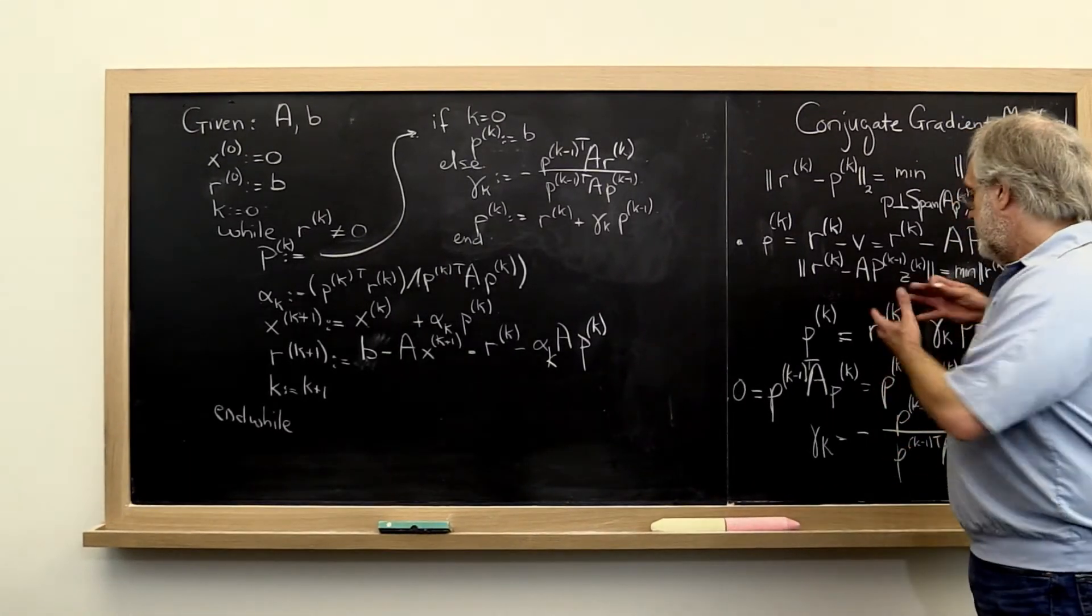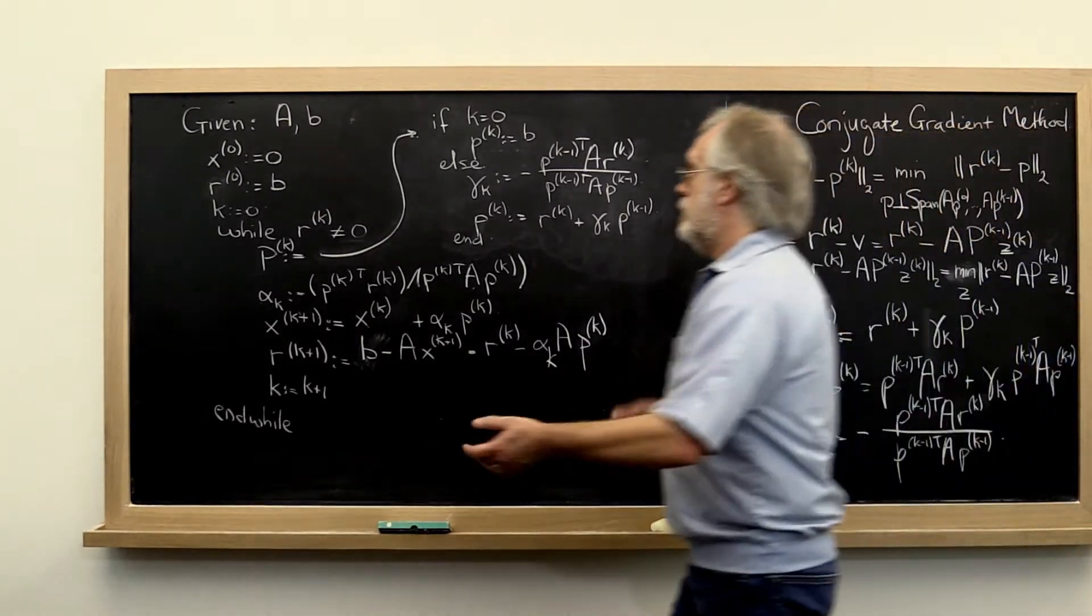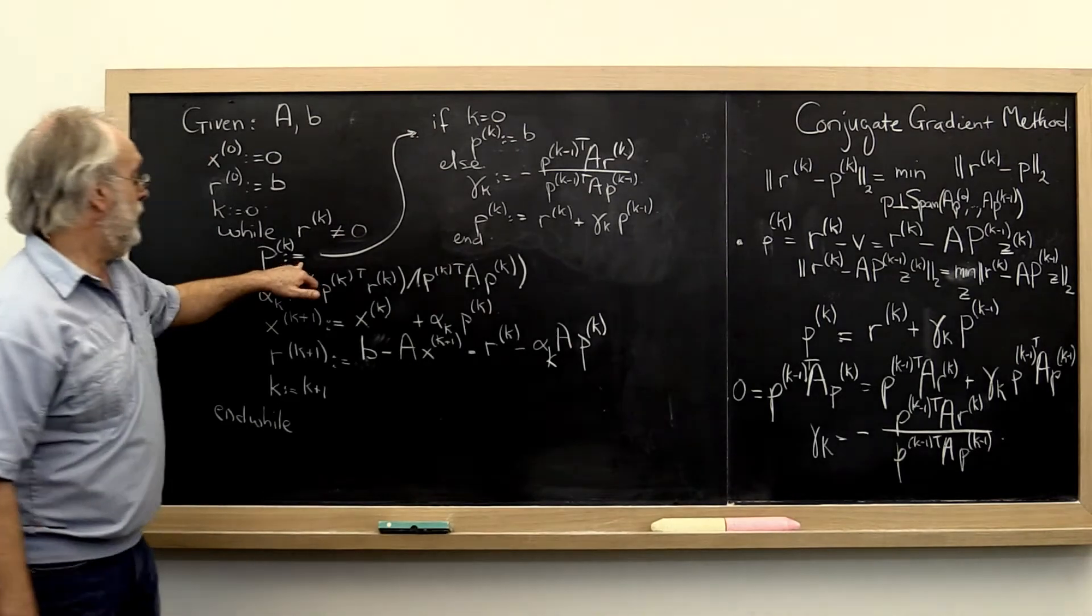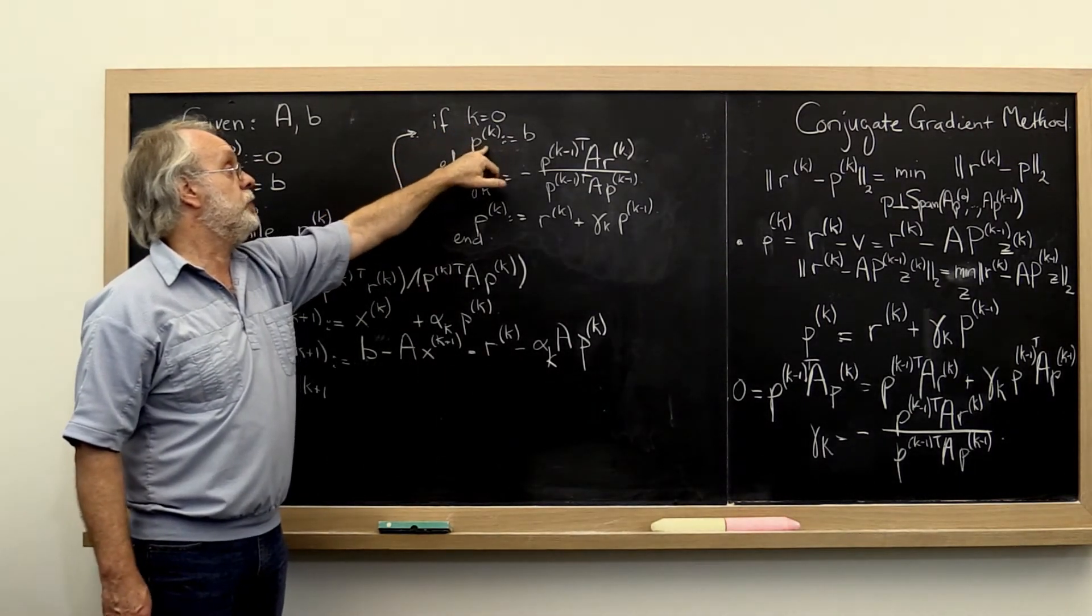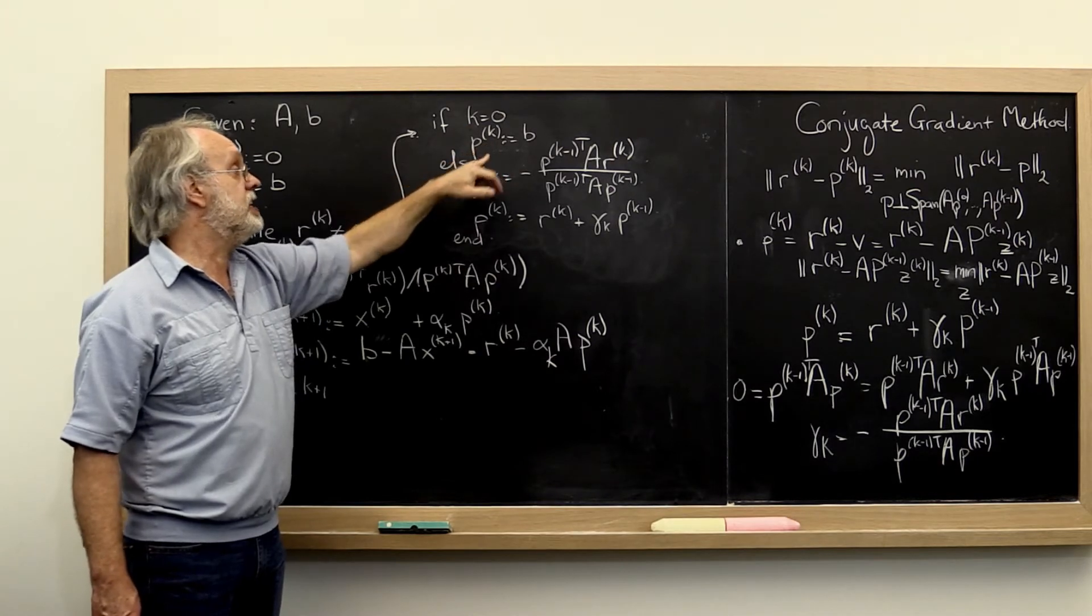So now we can take this insight and say, when we're ready to compute the next search direction, all we do is check whether this is the first iteration, in which case we set it equal to the right-hand side.